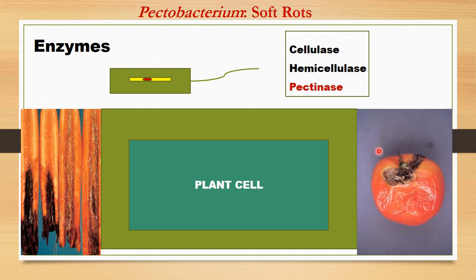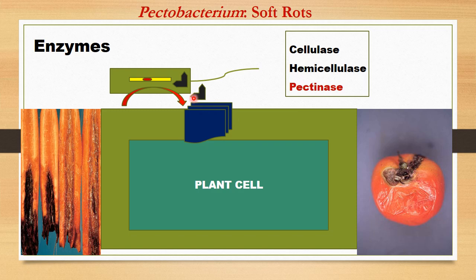This happens because Pectobacterium produces enzymes — cellulase, hemicellulase, and pectinase — that damage the cell wall of the host vegetable, breaking it into small pieces consumed by the bacterium. The more damage done, the more enzymes are produced, until the whole vegetable is no longer consumable. Enzymes are the most common chemicals used by pathogens to damage their host.